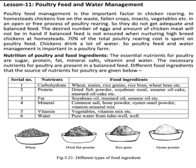For fat: soybean oil, mustard oil, and sesame oil, etc. And for mineral: common soil and bone powder, western, senile powder, and vitamin mineral mix. And vitamin: vegetable, vitamin, etc. And water: feed water from the tea oil. And then we'll get these from these nutrients.